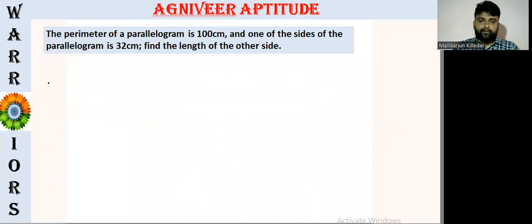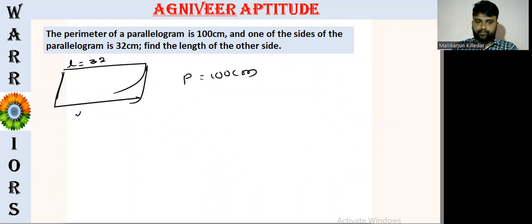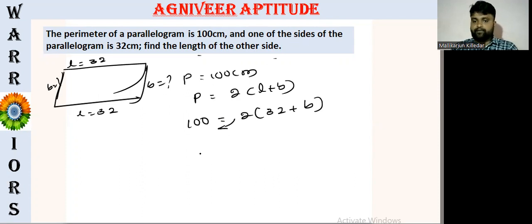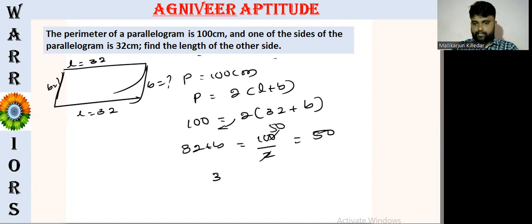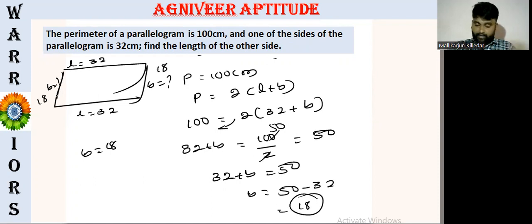So the perimeter of the parallelogram is 100 cm. One of the sides of the parallelogram is 32. So one of the sides is L equal to 32. Find the other side. So the parallelogram perimeter is 2 into L plus B. So the perimeter is equal to 100. So L is equal to 32. So 2 into 32 plus B equals 100 divided by 2. So the other side B is equal to H — 18.